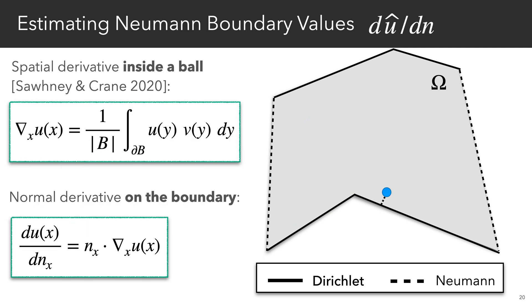To estimate the Neumann values, we use a point-wise gradient estimation technique proposed by Sawhney and Crane that defines the gradient as an integral over a ball that's centered on the boundary sample point. This technique only works for points that are inside the domain, so we do have to slightly offset the point from the boundary, and in our paper we discuss how to choose this offset in more detail.